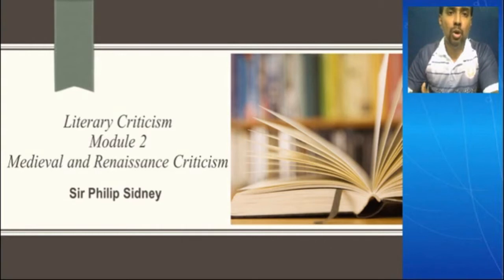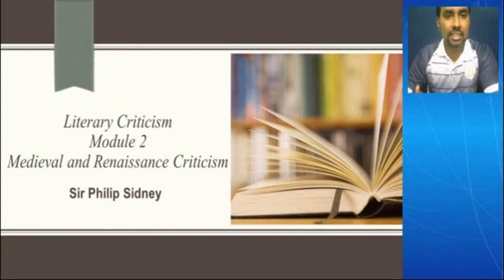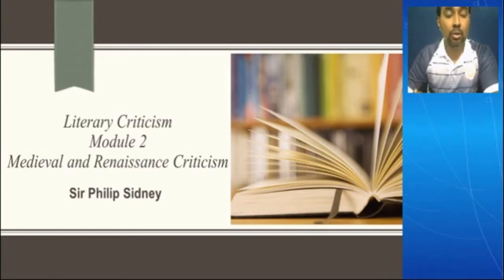We also saw the division of medieval criticism into five stages: late classical, Carolinian, high medieval, scholastic, and humanist. We also saw some of the important writers of this period like Bede and Alcuin, John Salisbury, Geoffrey of Vinsauf, John Garland, and our very own Geoffrey Chaucer and Dante Alighieri.